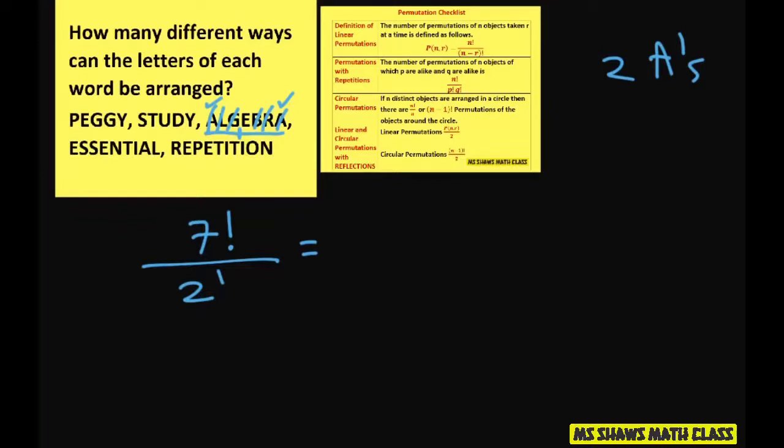So this would be like seven times six times five times four times three times two factorial divided up by two factorial. So that cancels out. And when you multiply this out, you're going to get this equals two thousand five hundred and twenty.